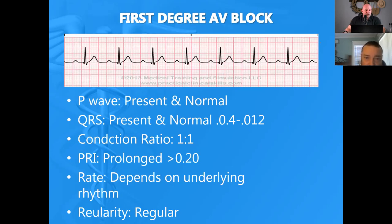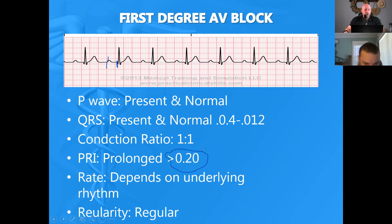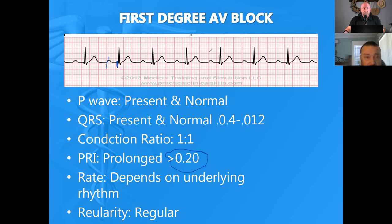First degree blocks — real simple. You and I probably walk around with a first degree AV block and don't even know it. The only reason it's a first degree AV block is because the PRI from the beginning of the P wave to the beginning of the R wave is longer than 0.20. So we would call this a sinus rhythm with a first degree block — not a big deal. A lot of people probably walk around with this. If the patient doesn't feel good, get their vital signs and just treat the vital signs.